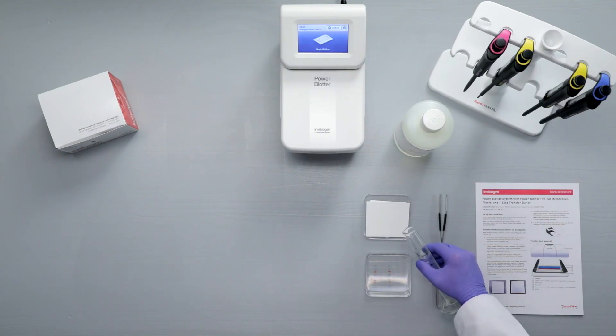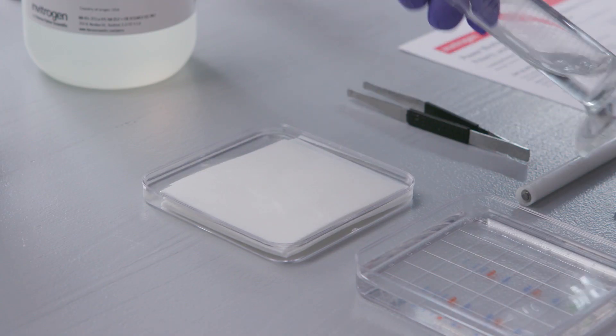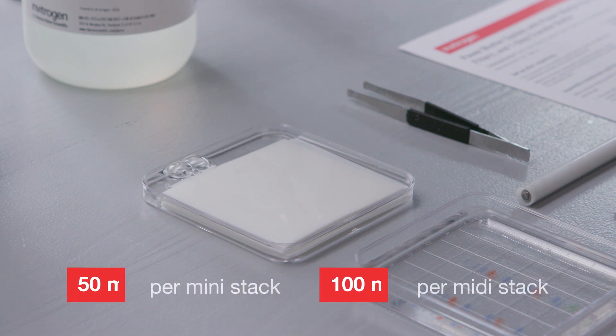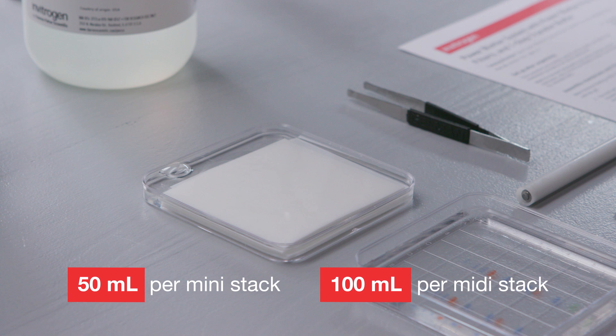Equilibrate membrane and filter papers in the diluted Power Blotter One-Step Transfer Buffer for a minimum of five minutes. Use enough buffer to completely cover the filter papers and membrane. Four pieces of filter paper are required for each membrane. When using a PVDF membrane, be sure to wet the membrane with methanol or ethanol before soaking in 1x Power Blotter One-Step Transfer Buffer.